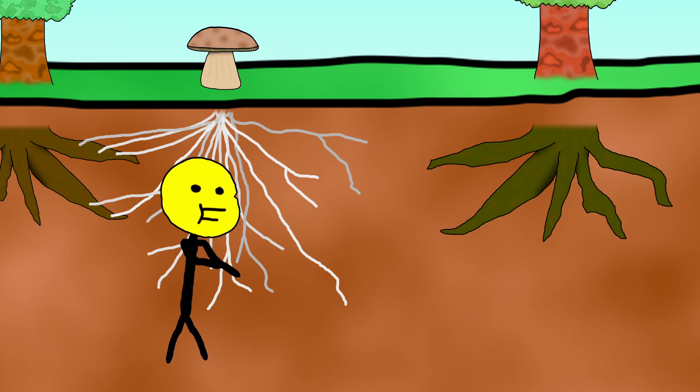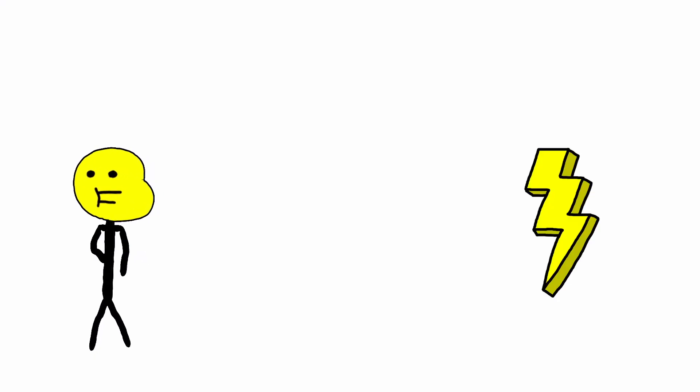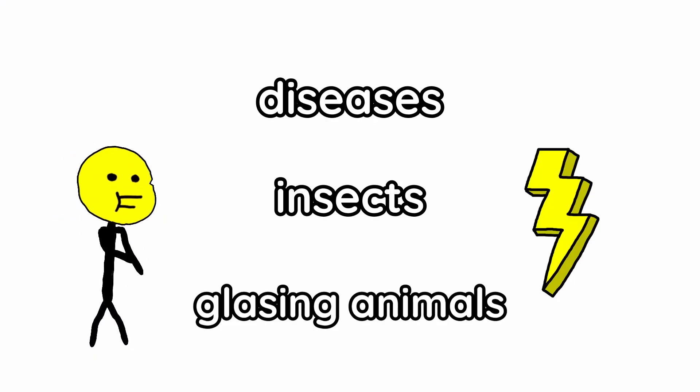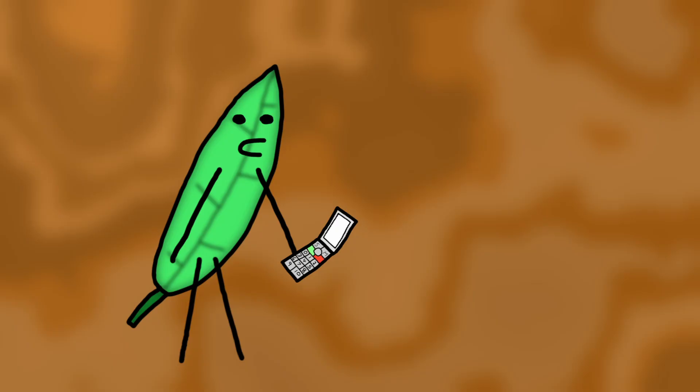Then the fungus spreads to other parts of the forest and finds other tree roots. It connects and trades resources with these new trees as well. Using these tree networks, different species of trees can send resources to each other. They can even send signals when there are diseases, insects, or grazing animals. It's like the internet, called the Wood Wide Web. Let's check what's on today.